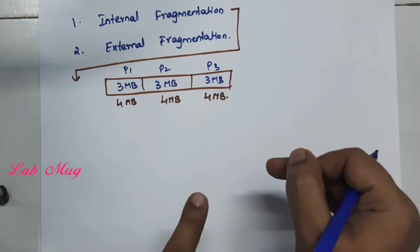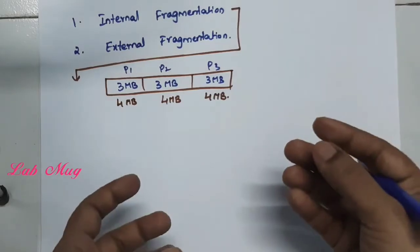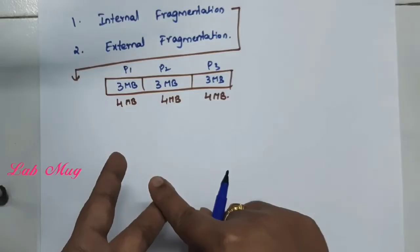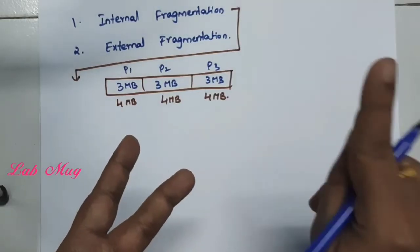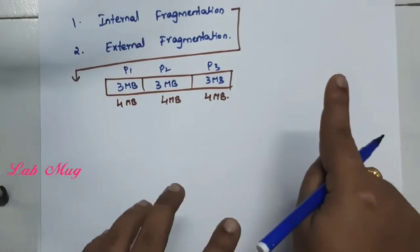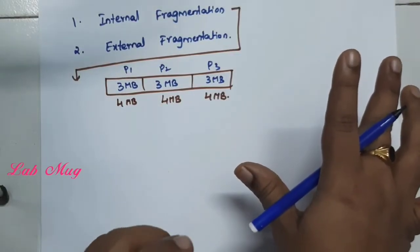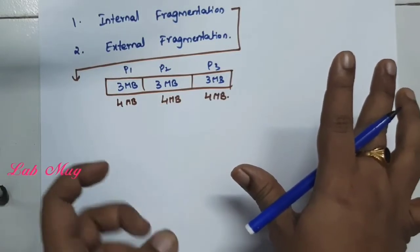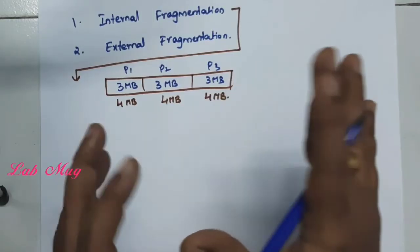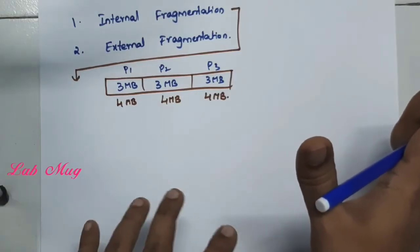In each and every partition, the remaining memory is not used. In the first partition, 1MB is wasted; in the second partition, 1MB is wasted; in the third partition, 1MB is wasted. So each and every partition wastes 1MB of memory. The main drawback of internal fragmentation is the waste of remaining unused memory.